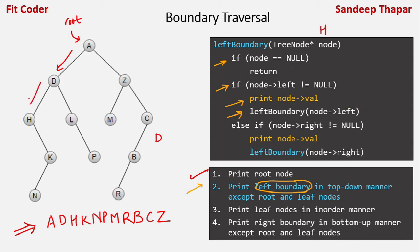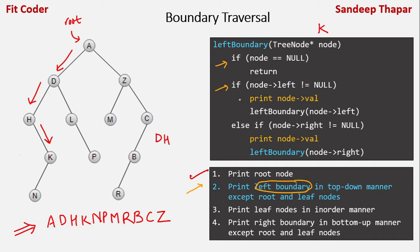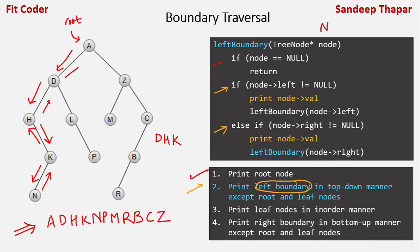The node becomes H. We check if H is null, then check left of H — it is null. We then check right of H, which is K, so we print H and recurse with K. For K, left of K is not null, so we print K and recurse with N. For N, both left and right are null, so neither condition is satisfied and the call to N ends. We unwind back through K, H, D, and A.